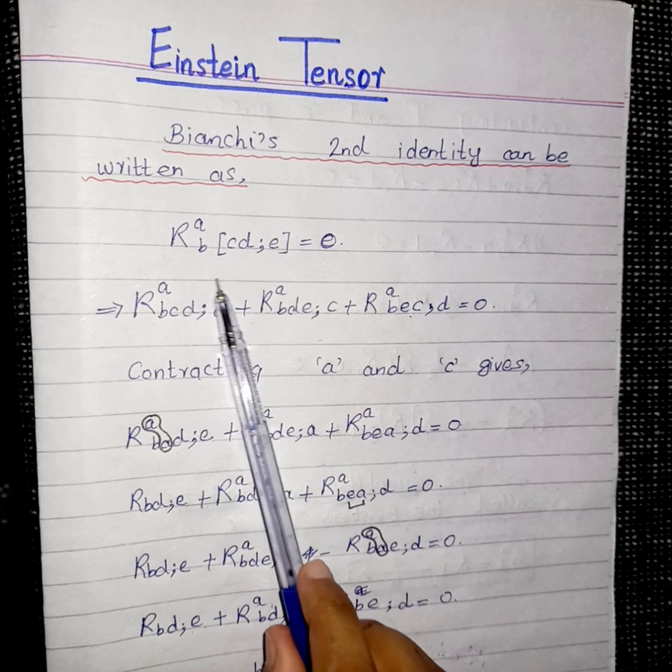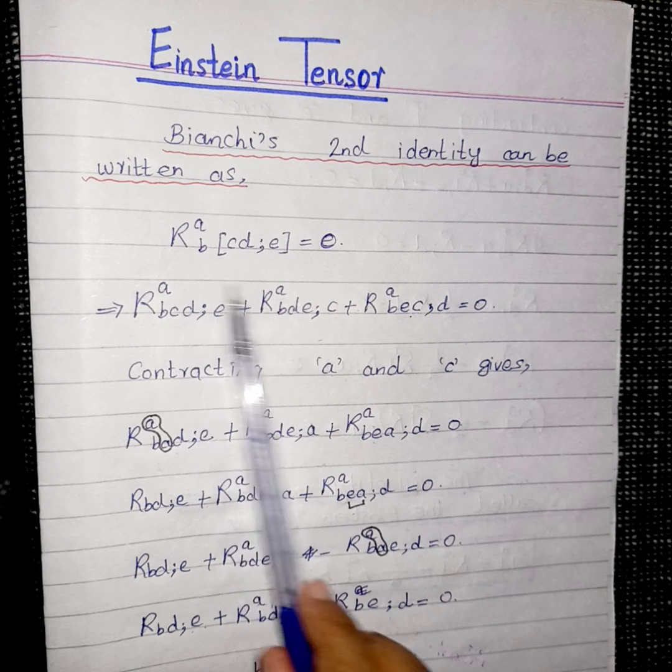Students, we know that Bianchi's cyclic identity can be written as this one and if we open it up then we will get this equation.